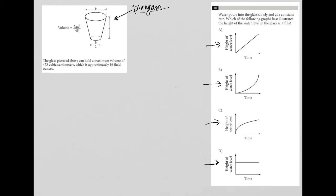So let's review the information provided up front about the diagram here, and then we'll see how that relates to the actual question. The information says the glass pictured above can hold a maximum volume of 473 cubic centimeters, which is approximately 16 fluid ounces. So very straightforward information.